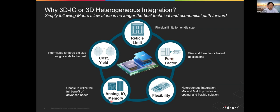Analog chips, IO, and memory never fully benefited from Moore's Law development because their size or numbers just cannot follow the traditional digital chip progression. All those considerations make designers and the industry try to find a better way — a small form factor that is still profitable — combining all those chips in a mix-and-match, heterogeneous way. That's what brings up 3D IC and 3D heterogeneous integration.